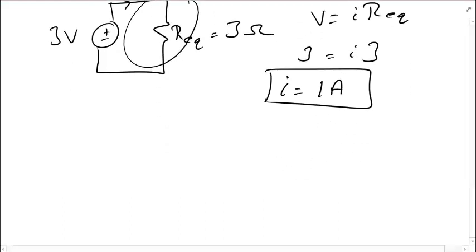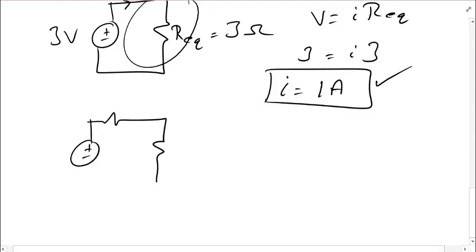So, we now say, I know what this is. I can now redraw my original circuit, and start working on the individual voltages. And this is 1 ohm, 1 ohm, and 1 ohm, and 3 volts.